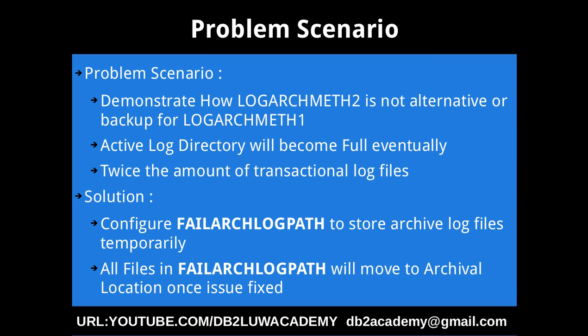By configuring logarchmeth2, you are actually consuming twice the amount of transactional log files until you fix the issue with logarchmeth1 failing. The solution is to configure the failure archive log path. This is another configuration parameter available in the dbcfg. When you set it, it acts like a temporary location where if your primary archive log mechanism fails, all those log files will move from the active log directory to this failure archive log directory. Once you fix the issue, the files from the failure archive log directory will move back to the original archival log location.